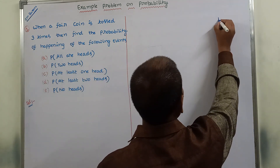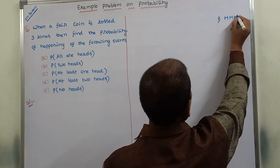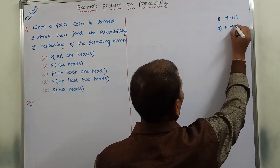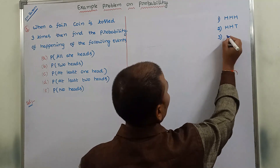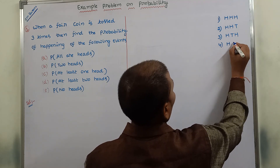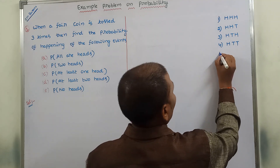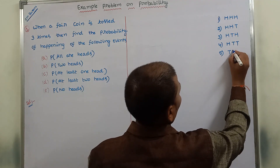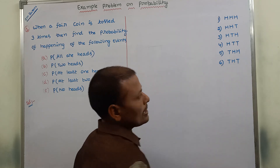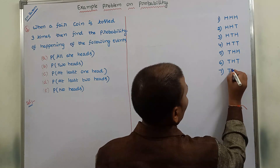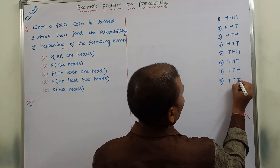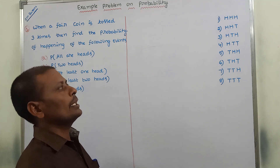Those eight possibilities are: first, all heads; second, two heads and one tail; third, one tail and two heads; fourth, one head and two tails; fifth, one tail and two heads; sixth, two tails and one head; seventh, two tails and one head; and eighth, three tails. These are the possibilities we are getting.